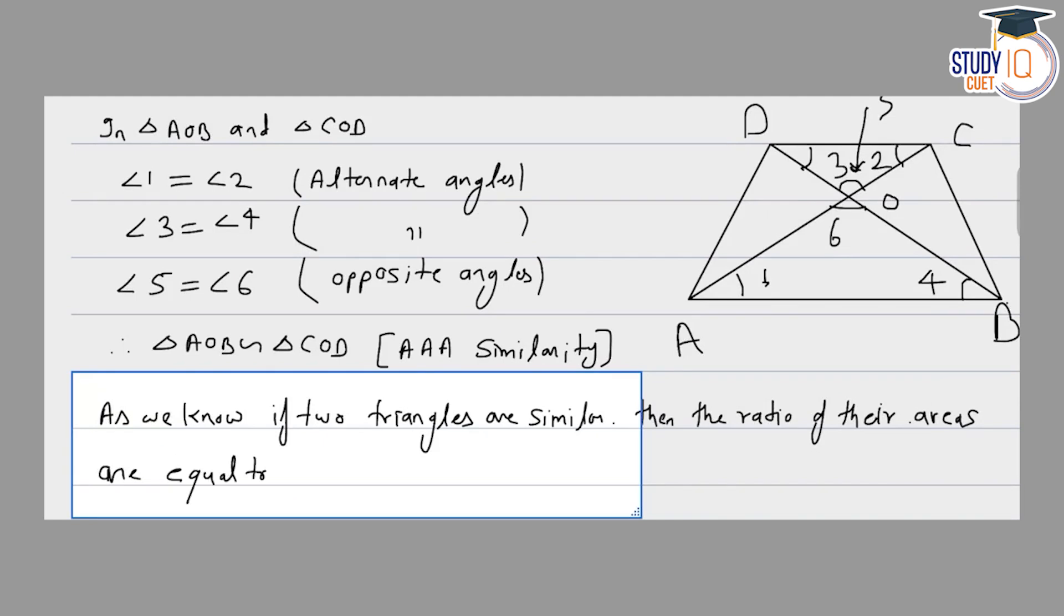The ratio of their areas equals the ratio of the square of corresponding sides.